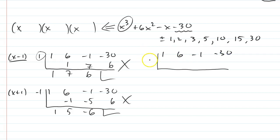Let's try 2. 2 times 1 is 2, 6 plus 2 is 8, 2 times 8 is 16, this is 15. Well look at that, 2 times 15 is 30. And we found something to divide it out.